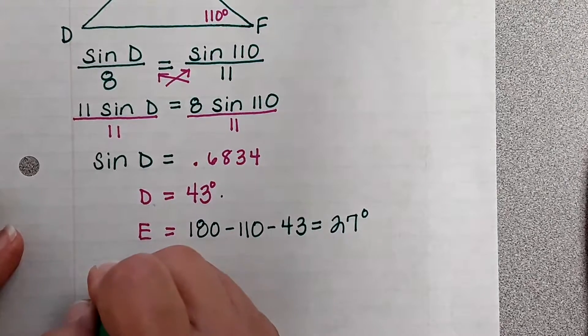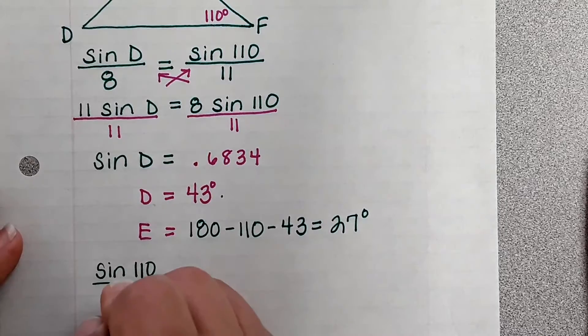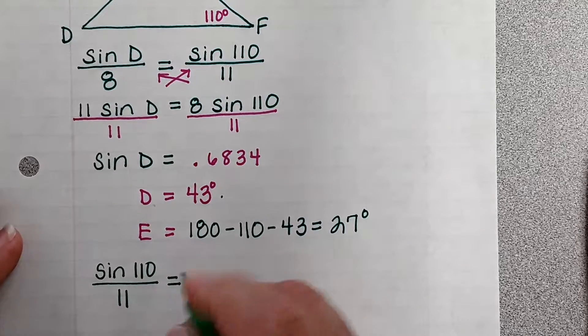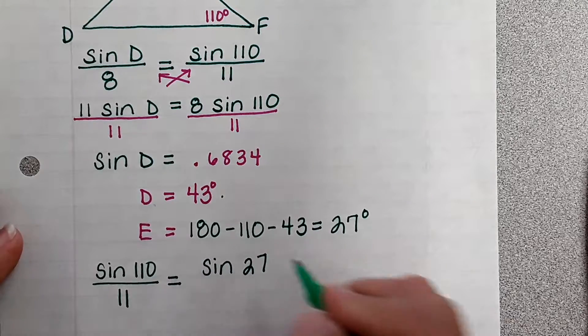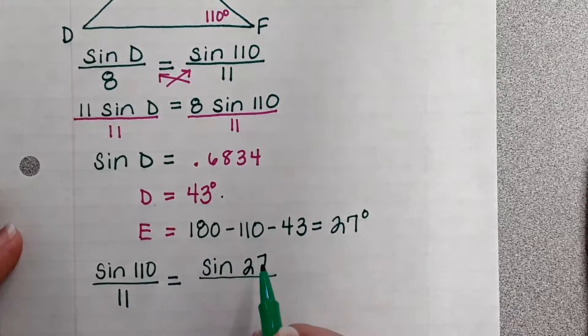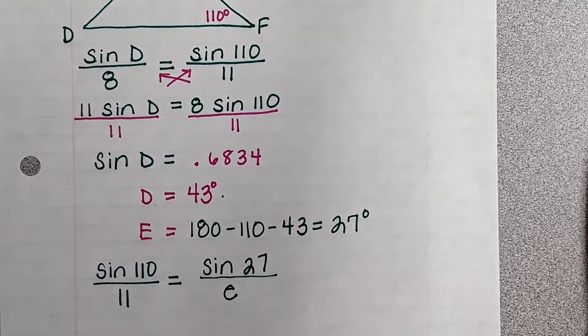So we're going to use sine of 110 over 11, and then sine of 27 because that's angle E. The reason we're using angle E is because we're looking for side e, the lowercase e.